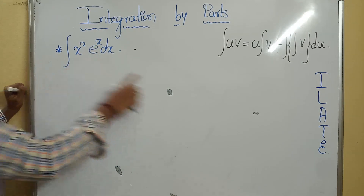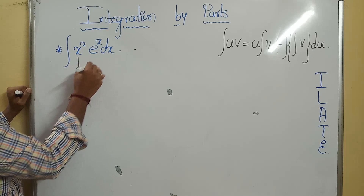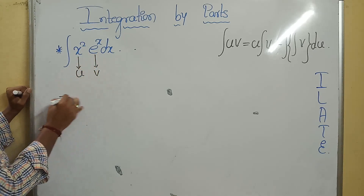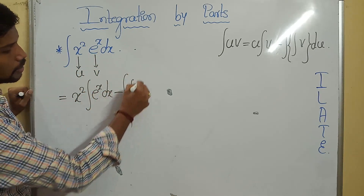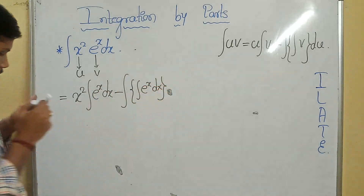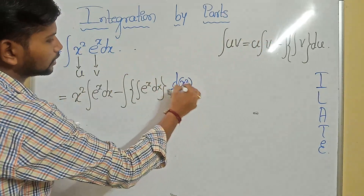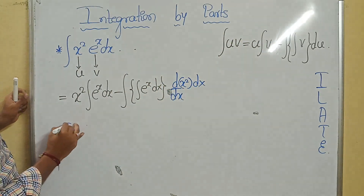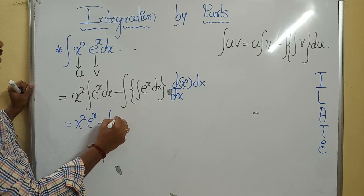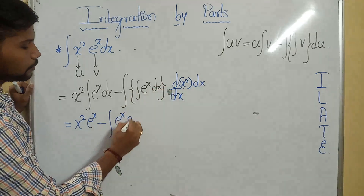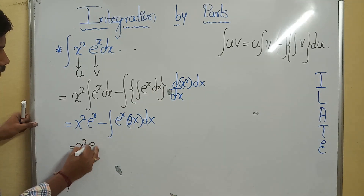Observe the next example: x²·eˣ. Here x² is algebraic and eˣ is exponential. Algebraic comes first in ILATE, so x² is u and eˣ is v. Applying the formula: x² times integral of eˣ dx, minus integral of [integral of eˣ dx] times d/dx of x², dx. That gives x²·eˣ minus integral of eˣ times 2x dx.